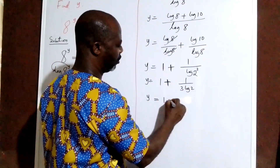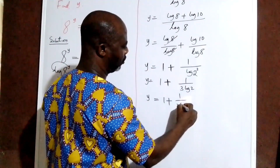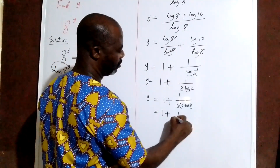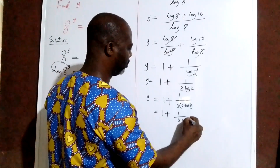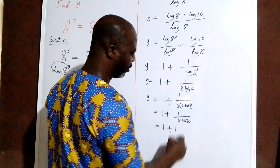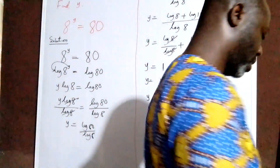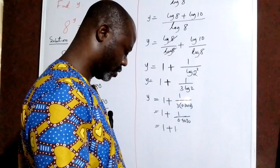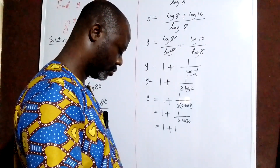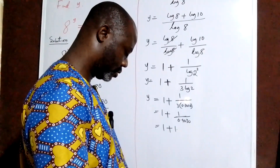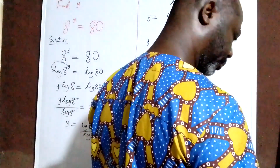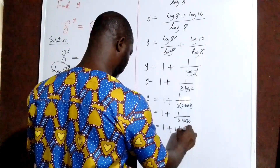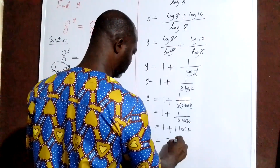So I have y equal to, and log 2 is 0.3010. So I have 1 plus 1 over 0.9030. Once I divide that, using my calculator, I have 1 divided by 0.9030, that is going to give me 1.1074. Adding 1, that will give us 2.1074. So this gives the answer to the question: y equal to 2.1074.